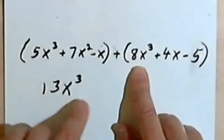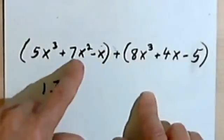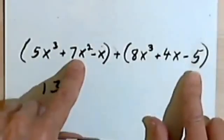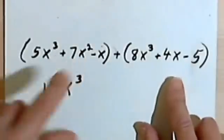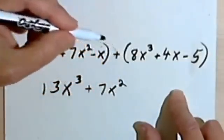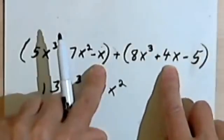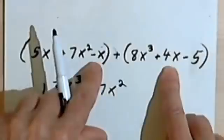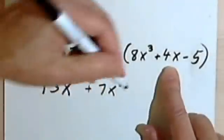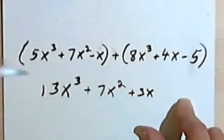Then I'll go to my next exponent down, which would be 2, so I'm looking for x². I've got a 7x². And over in the second polynomial, there is no x² at all. So I'm just going to have 7x². Then I've got a -x and a positive 4x. So it's like negative 1 and positive 4. Negative 1 and positive 4 is positive 3. So this is going to be 3x.